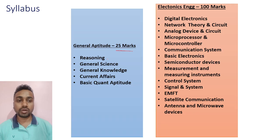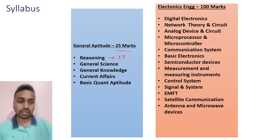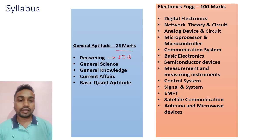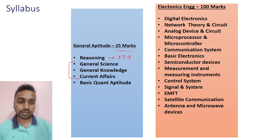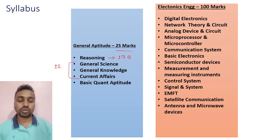In the 25-mark General Aptitude section, for reasoning they will give you 13 questions for 13 marks. For General Science, General Knowledge, and Current Affairs, you will get 12 questions for 12 marks.